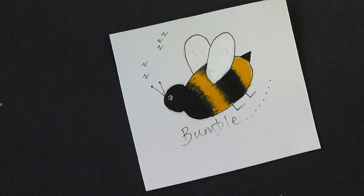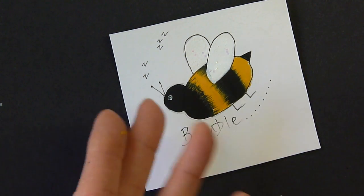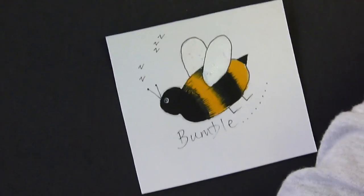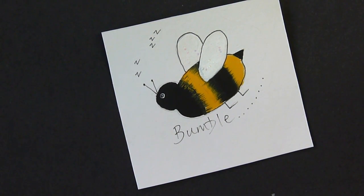So, there you go. There's a quick and easy little bumblebee. Obviously, I've done one quite big. You could do little ones, add them on to absolutely anything. Cards, painted projects that you've done. Just have a go. Enjoy. Thank you.